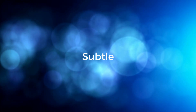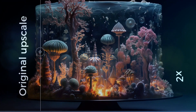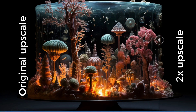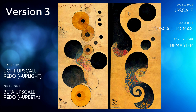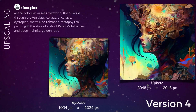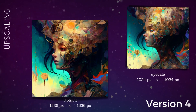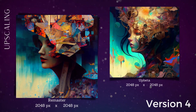The Midjourney team is calling this a subtle upscaler, which means it doesn't significantly change the details of your original image. In the past, we've seen upscalers for version 3 and version 4, and these were more creative upscalers. This means they changed or reprocessed the image during the upscale. Sometimes you ended up with a surprise — upscaling might eliminate details that you wanted to keep, or even significantly change your image.